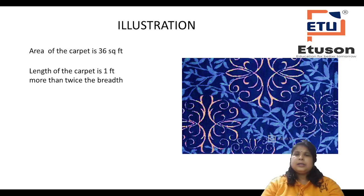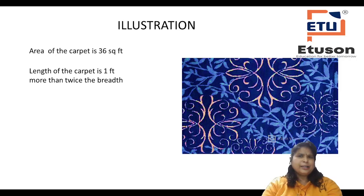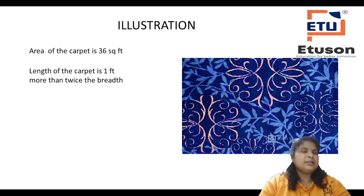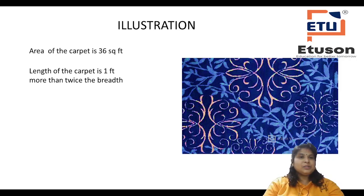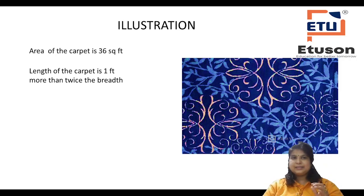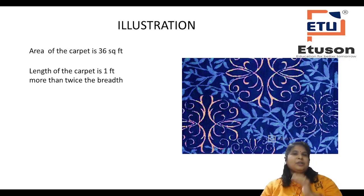Suppose I am going to purchase a carpet with area equal to 36 square feet. The length of the carpet is 1 feet more than twice the breadth. What is the relationship between length and breadth of the carpet? Length is 1 feet more than twice the breadth of the carpet.